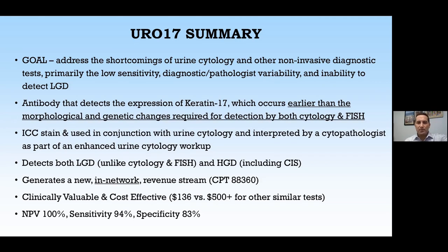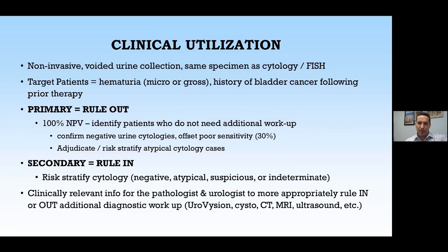Some statistics on the assay: through many published papers, it has a 100% negative predictive value, sensitivity of 94%, and specificity of 83%. Those published papers are available upon request. How clients are utilizing this: they screen hematuria patients for bladder cancer, or monitor patients who've had bladder cancer and chemotherapy for recurrence. Recurrence is a major problem in bladder cancer, occurring approximately 75% of the time.